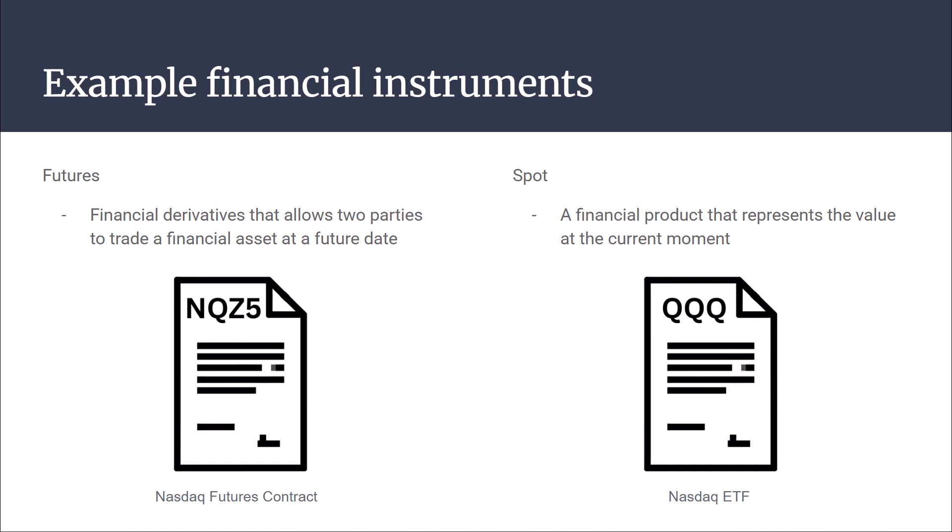A future product is a financial derivative that allows two parties to trade a financial asset at a future date, whereas a spot product is a financial product that represents the current market value at the present. It could be, for example, the current value of a physical commodity or an ETF that tracks the current market price.